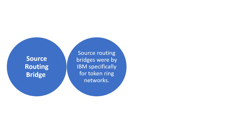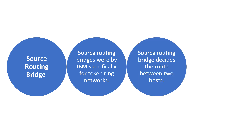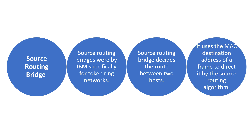The next one is the source routing bridge. Source routing bridges were designed by IBM for token ring networks. This bridge decides the route between two hosts, and it uses the MAC destination address of a frame to direct it using the source routing algorithm.